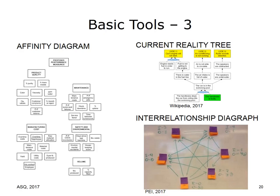The current reality tree is commonly part of the toolkit and employs cause and effect logic to determine what to change by identifying the root causes or core problems. Another purpose of the current reality tree, whether developed by an individual or team, is to create a consensus among those involved with a problem.